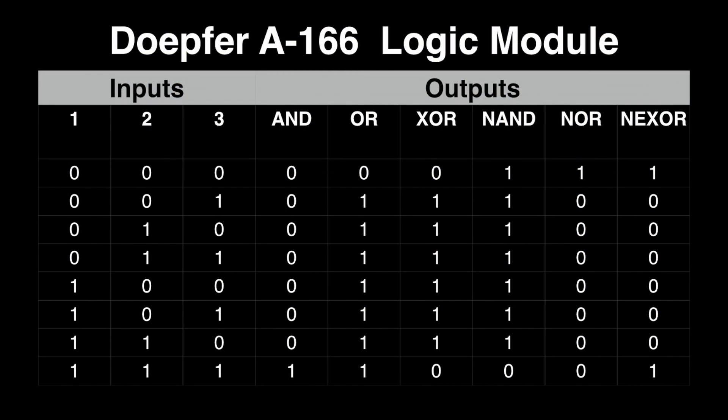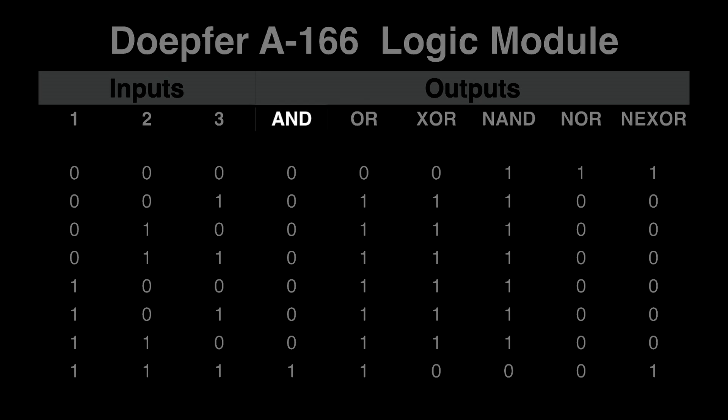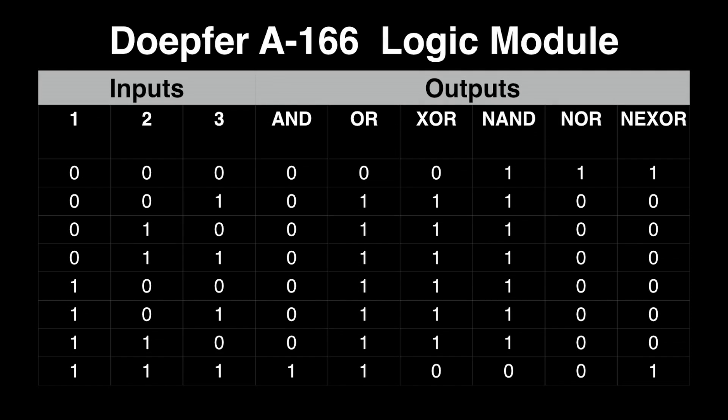Let's see what a truth table looks like for this circuit. This can act as a reference to the function of the A166 logic module. If you've seen the manual for the A166, this may look familiar. You could go through and analyze it column by column, row by row, comparing high and low voltages, but it might take a while depending on your understanding of the terms AND, OR, and XOR. So let's break this down piece by piece.